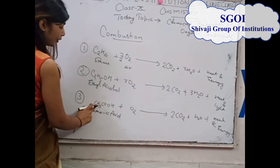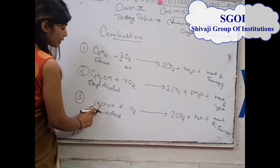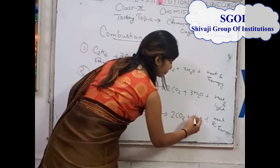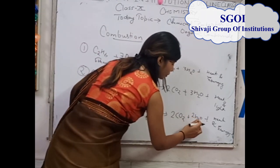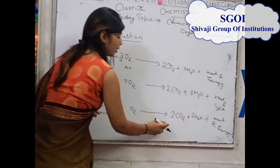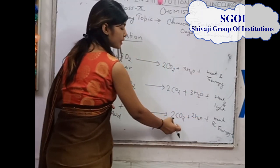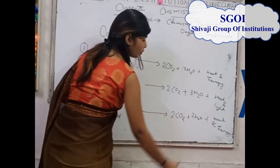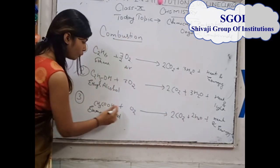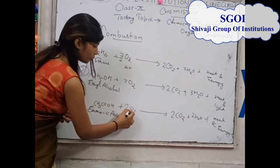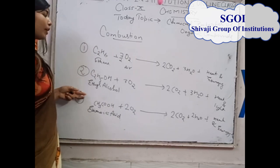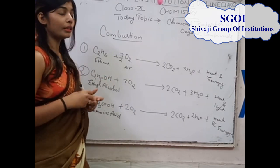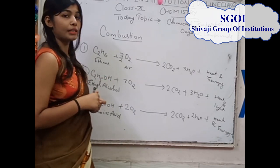Now balancing the ethanoic acid combustion reaction: the number of carbon is 2. Number of hydrogen: 3+1 = 4, so 2×2 = 4. Number of oxygen: 2×2 = 4, then 4+2 = 6. The chemical reaction is now balanced. All three reactions — ethane, ethanol, and ethanoic acid — are chemically balanced.